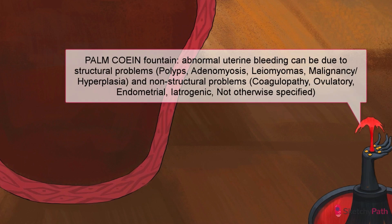Why yes it is. These coins in a palm should remind you of the acronym PALM-COIN. PALM-COIN is used to organize the causes of abnormal uterine bleeding into structural — that is, physical lesions — and non-structural causes. Structural causes are the PALM: Polyps, Adenomyosis, Leiomyoma, Malignancy and hyperplasia.